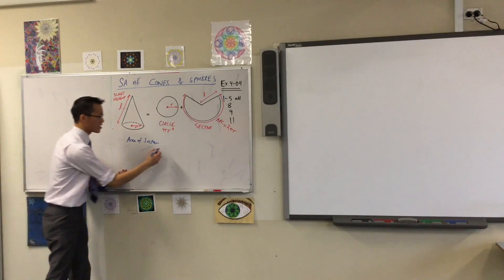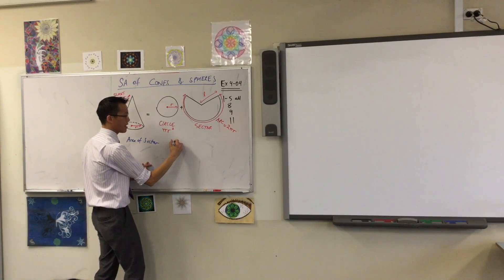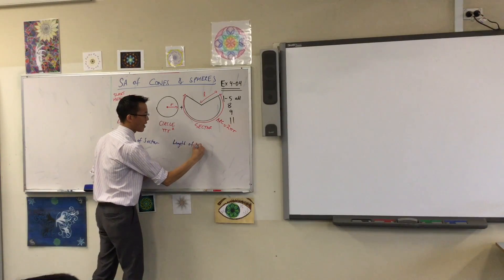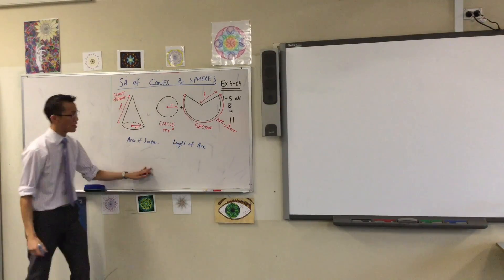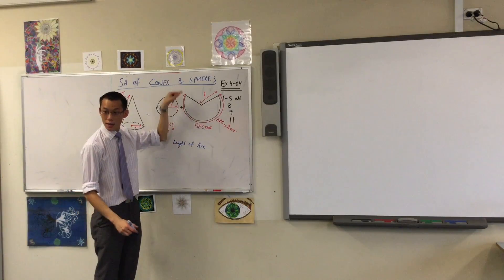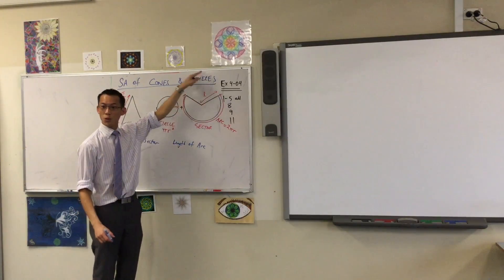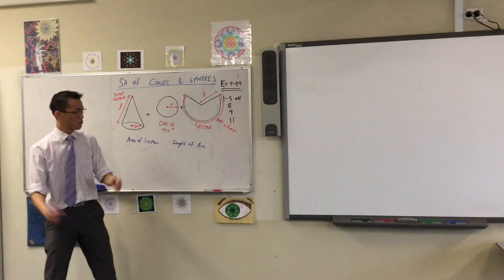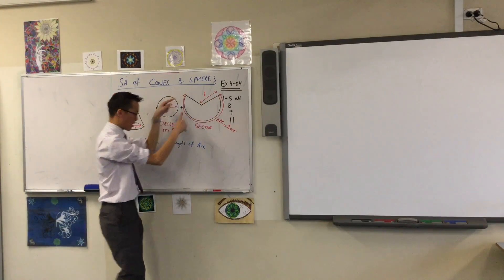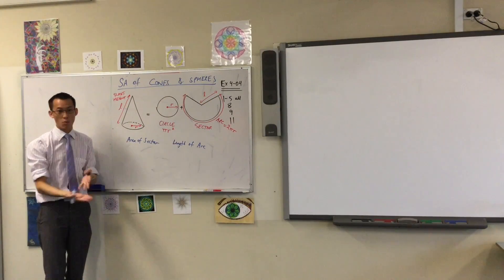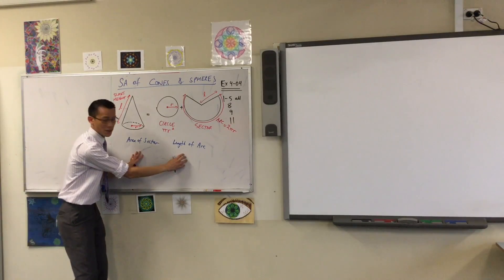The area of the sector is clearly related to the length of the arc. Do you see, the longer the arc becomes, if the arc went all the way around, it would make the whole circle. And as I make that arc shorter, the area would also get smaller. Do you agree with that? So these guys are related to each other.